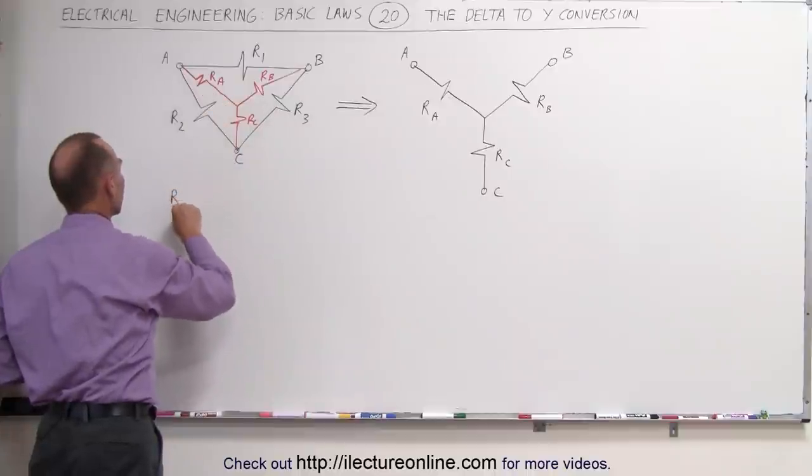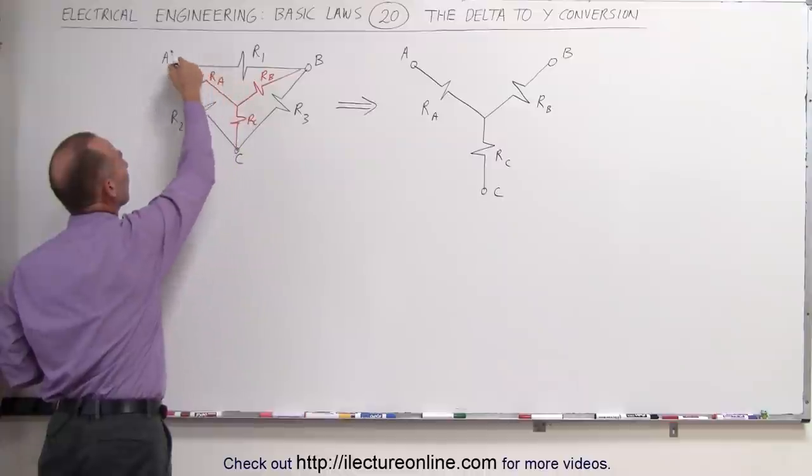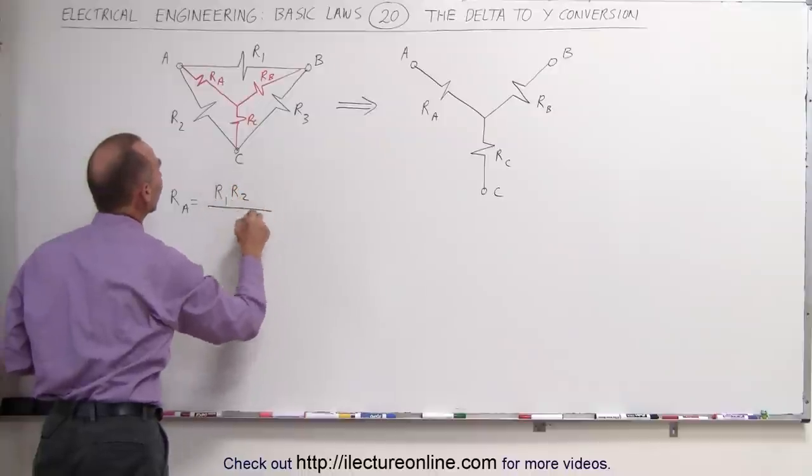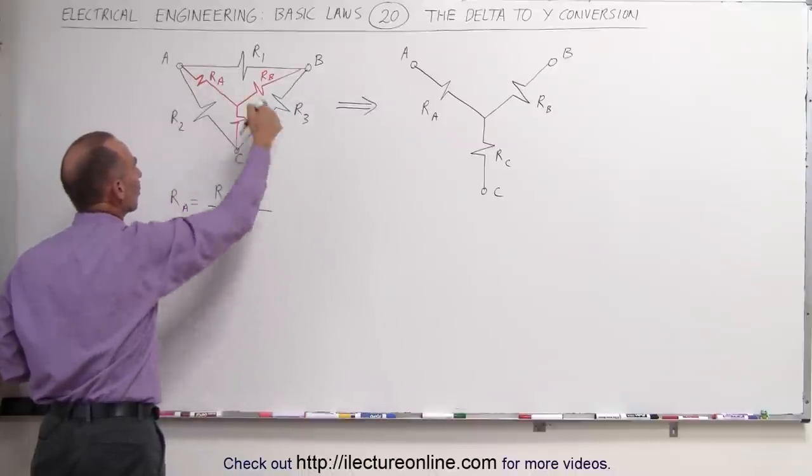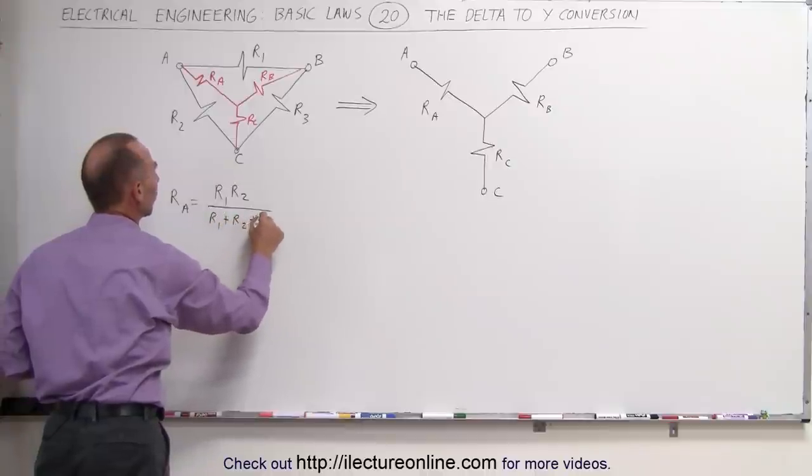RA is equal to the product of the two resistors it's in between. So in this case, it's a product of R1 and R2, and is divided by the sum of the three resistors in the Delta. R1 plus R2 plus R3.